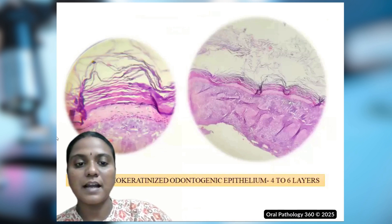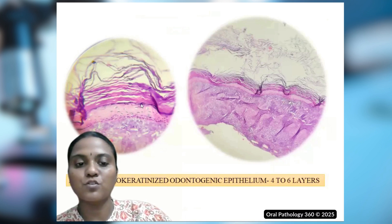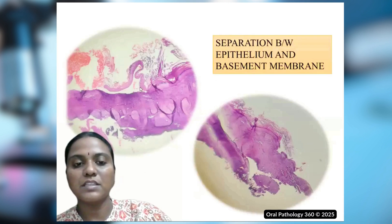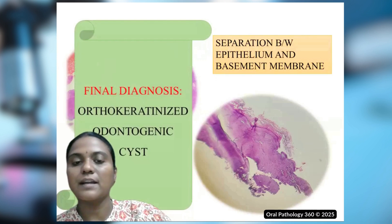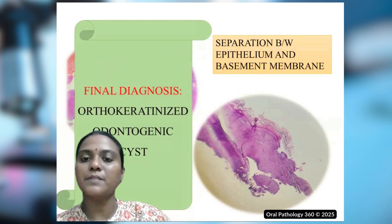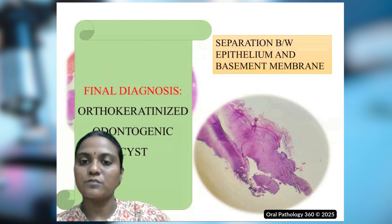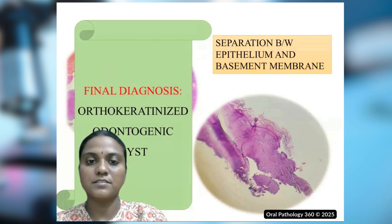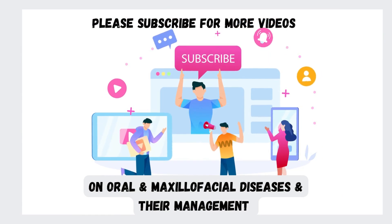After processing the specimen, the pathologist found a different picture — a hyper-orthokeratinized odontogenic epithelium of 4 to 6 layers with characteristic basal layers showing tombstone appearance. Along with the keratinized epithelium, cholesterol clefts were seen, and there was separation between the epithelium and connective tissue in a few areas. This led to a final diagnosis of orthokeratinized odontogenic cyst. Even when general dental practitioners or radiologists provide a provisional diagnosis, the pathologist plays a definitive role in confirming the correct diagnosis.